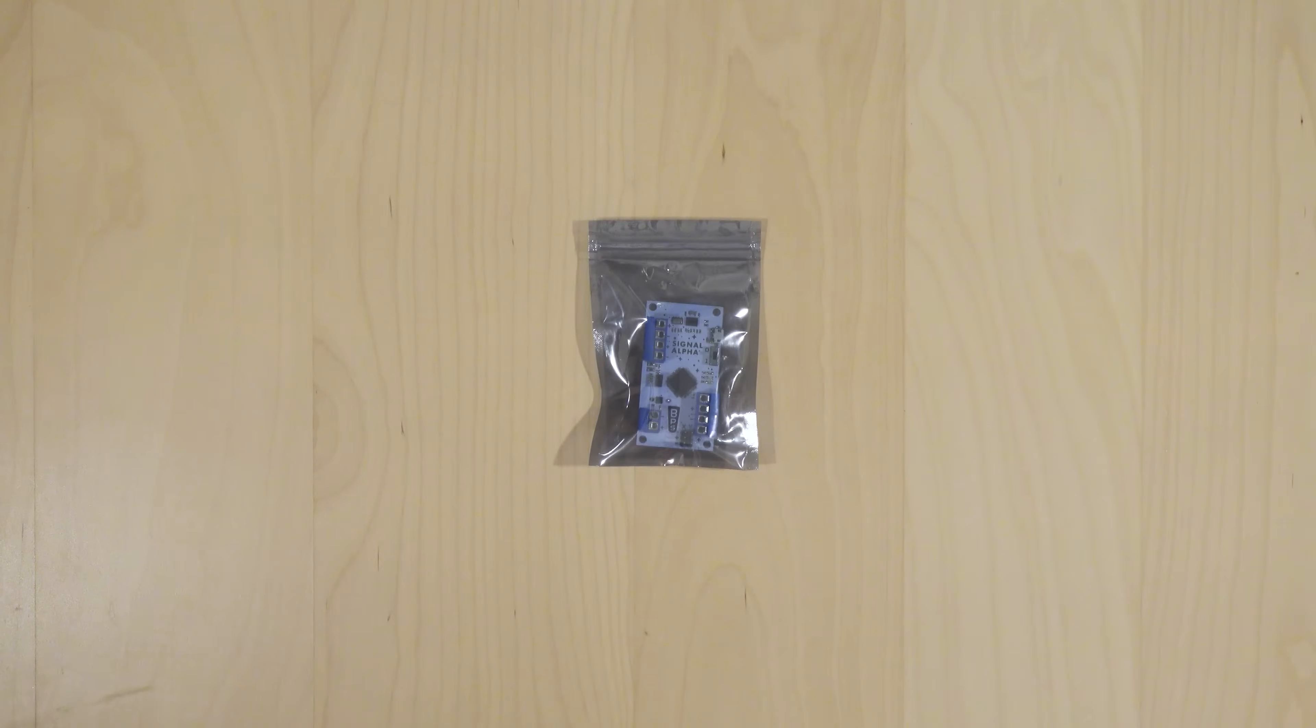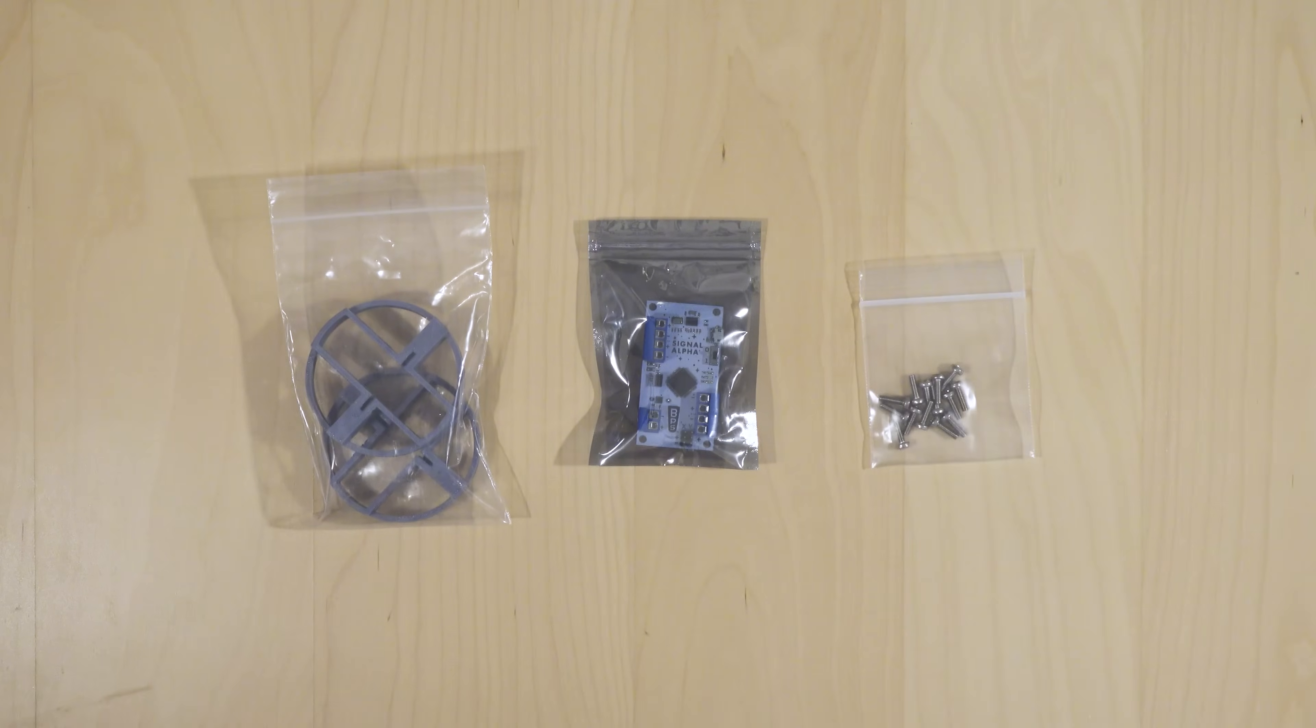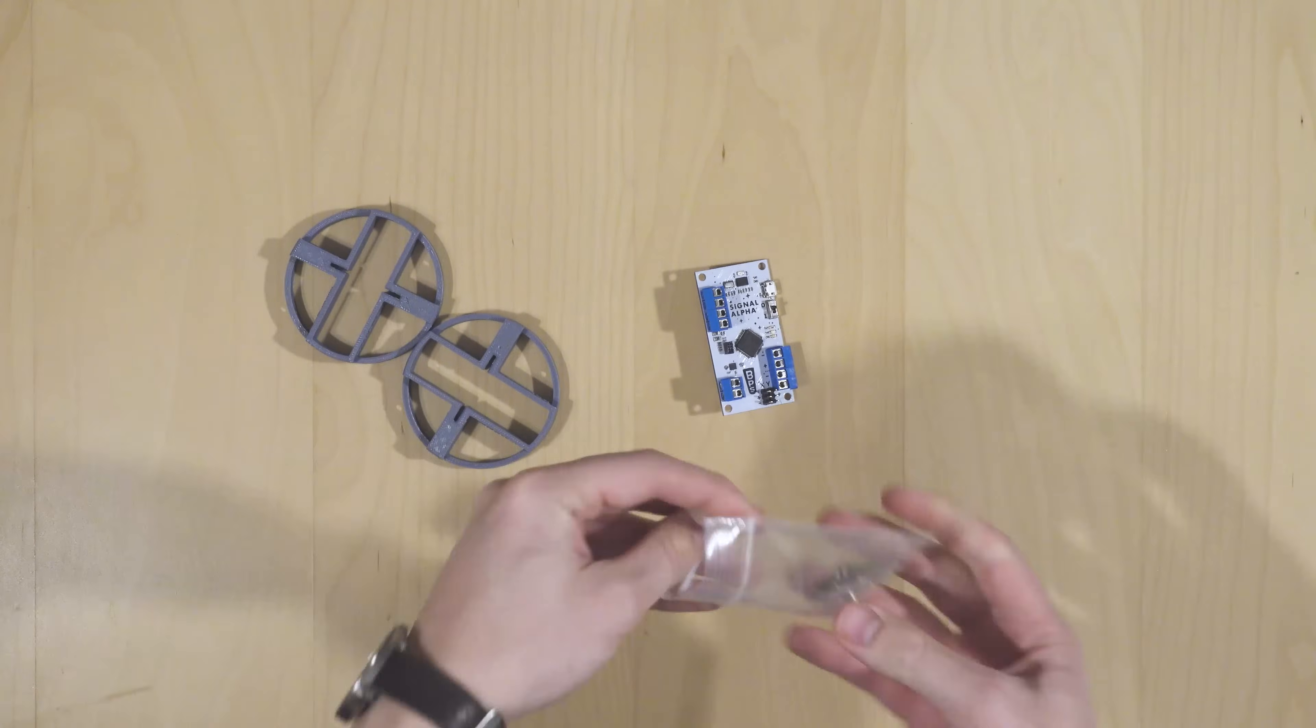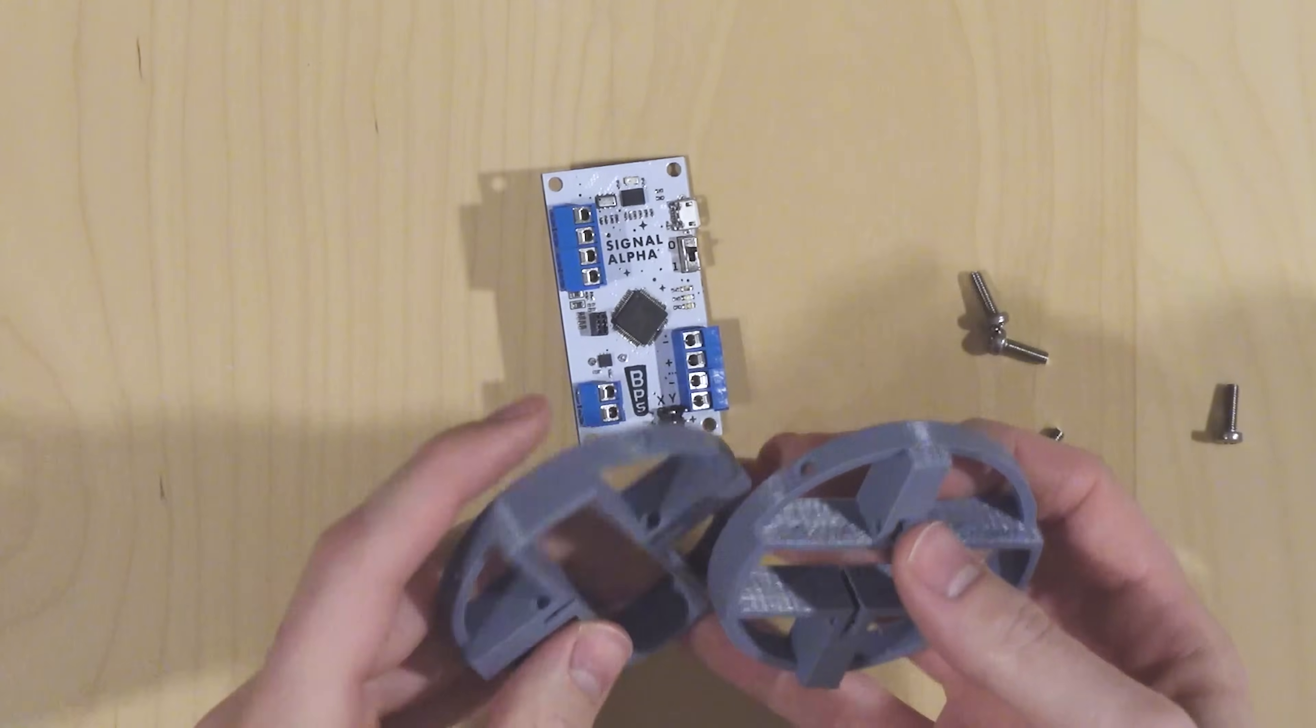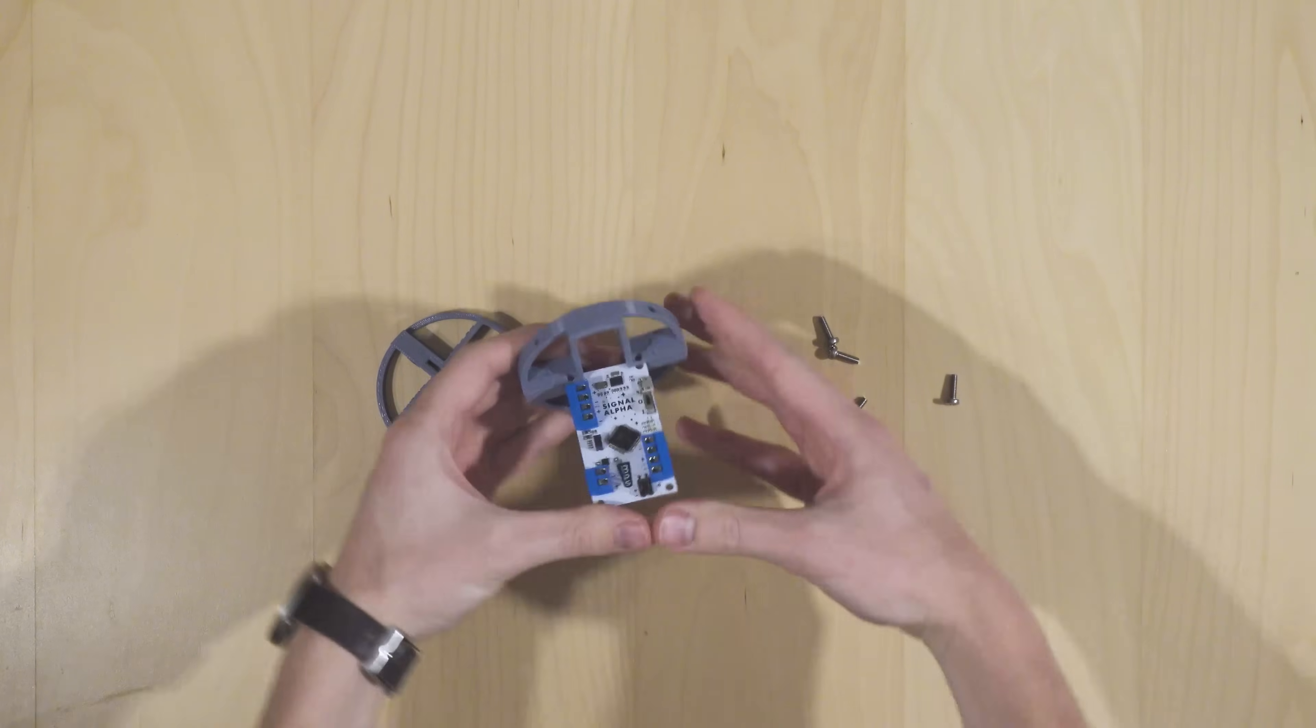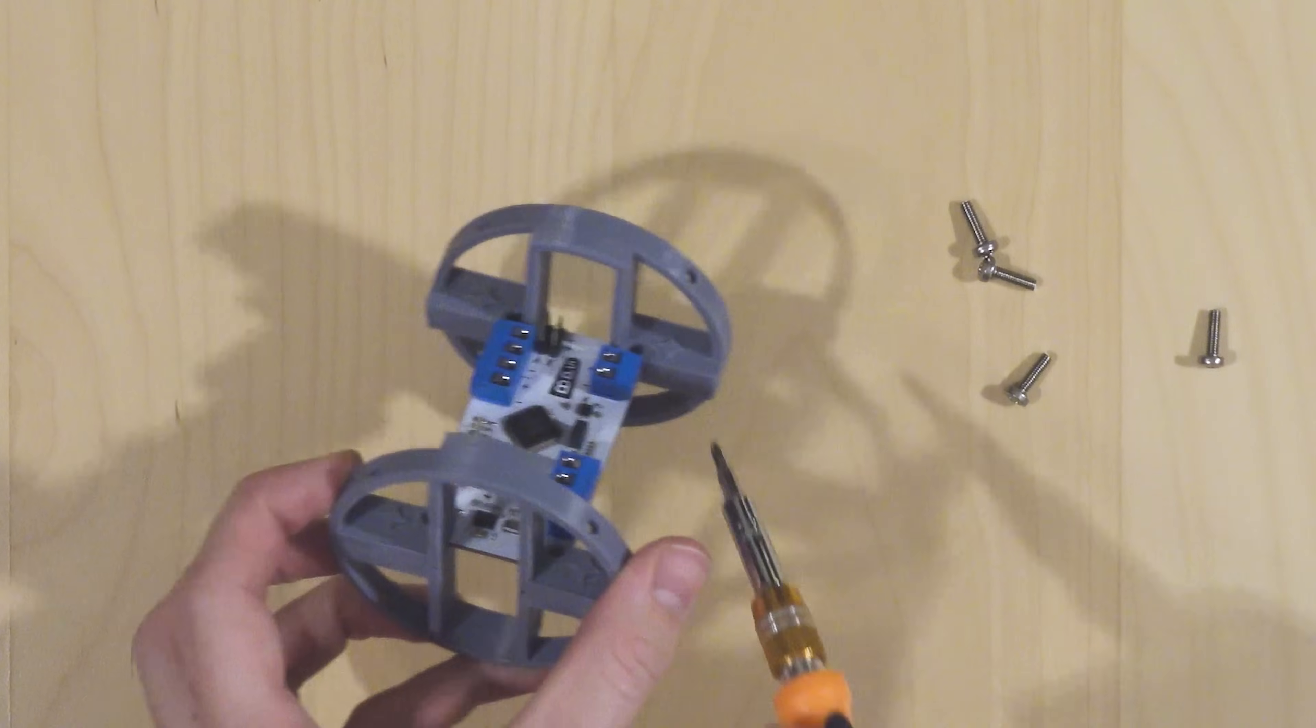For this first part you're going to need the Signal Alpha flight computer, as well as the mounting brackets for the computer, and some M3.5mm screws in the 12mm length. Open up the flight computer, as well as the mounting brackets, and pull out four of the M3.5 12mm screws. We're going to want to pay attention to the side text on these mounting brackets. Some of the text is upright, some of it is upside down, and when mounted correctly they will correspond with the upwards direction of the rocket. It should be a pretty snug fit against the PCB, that's okay for now.